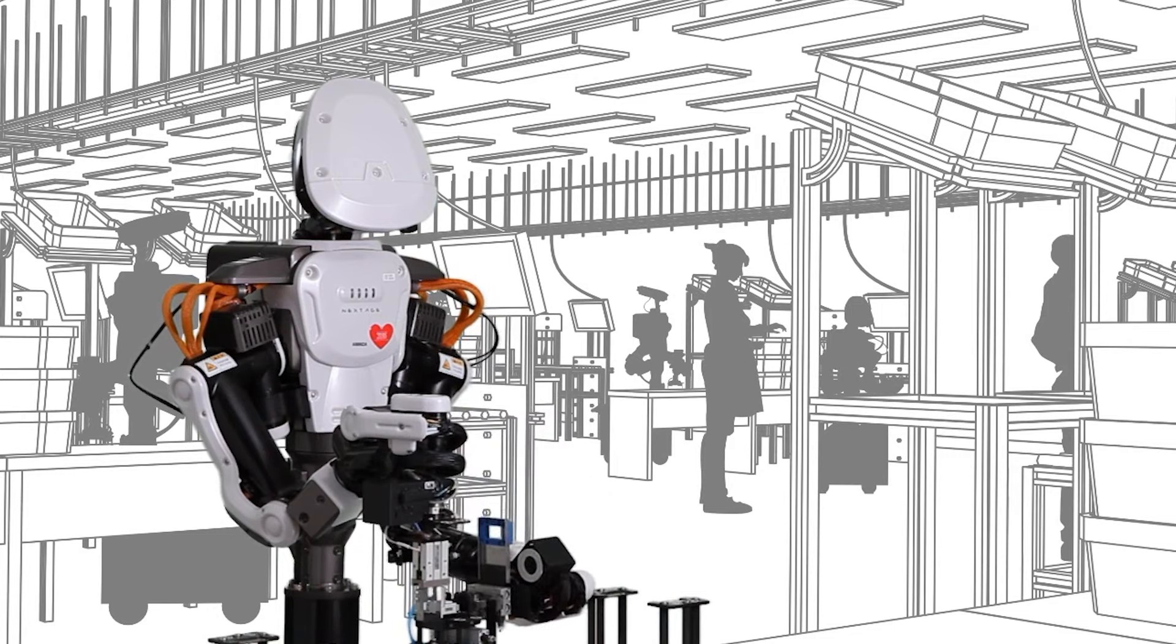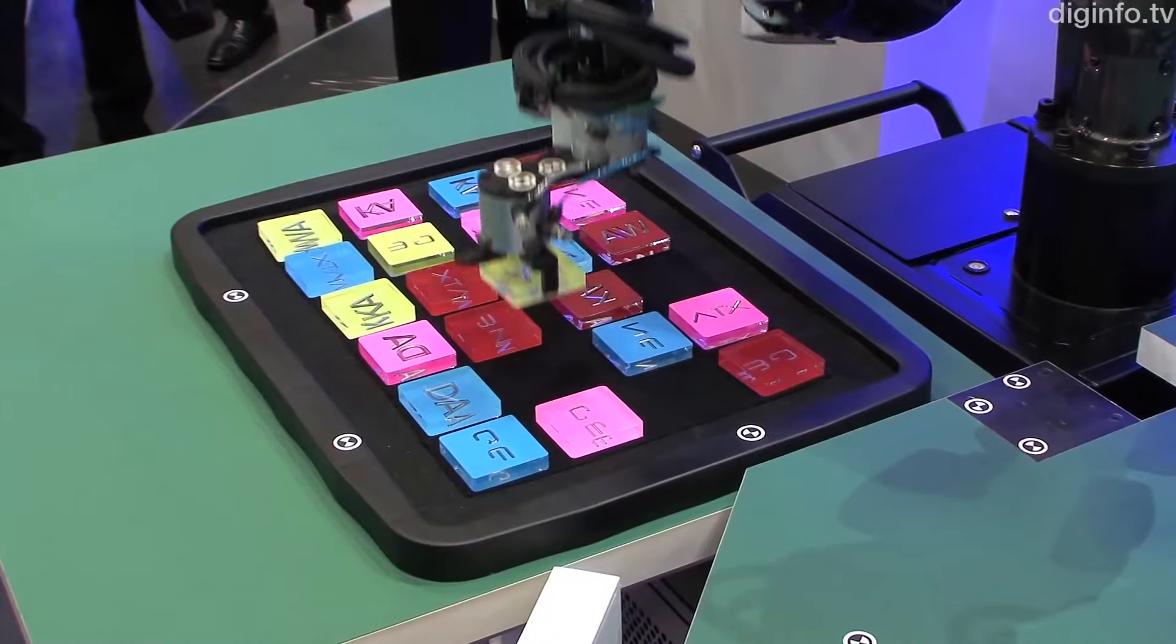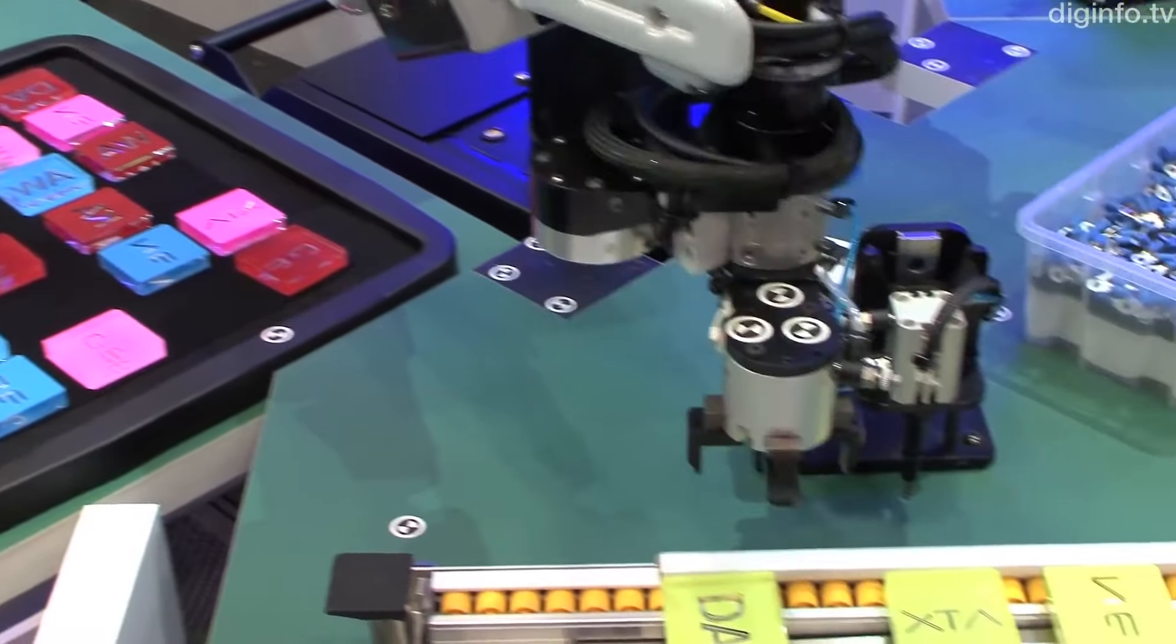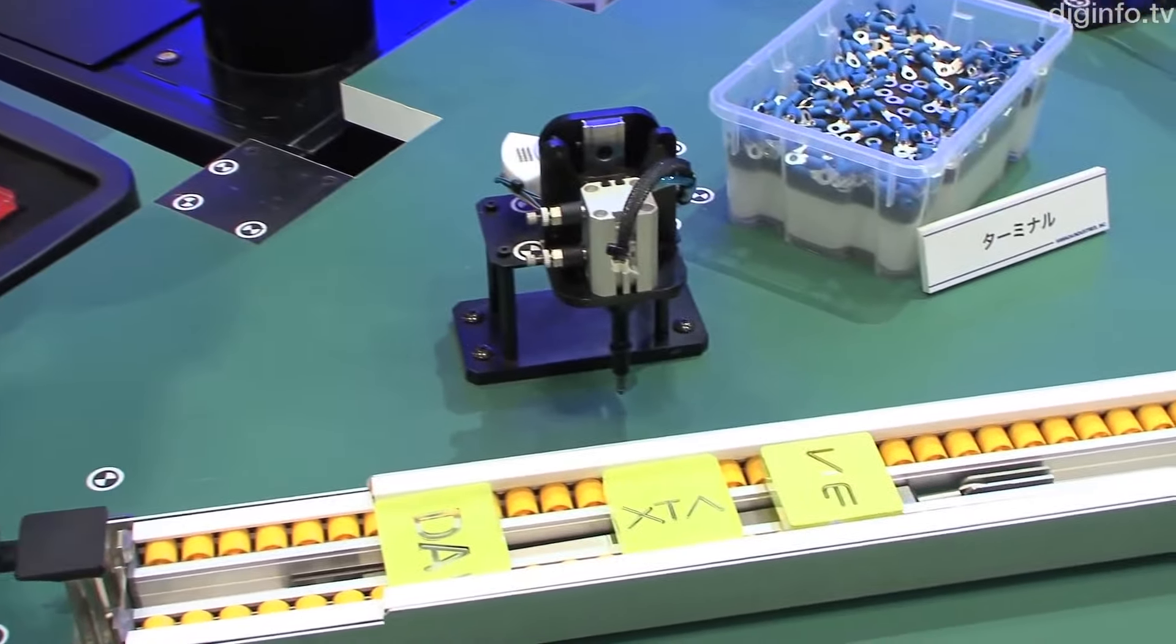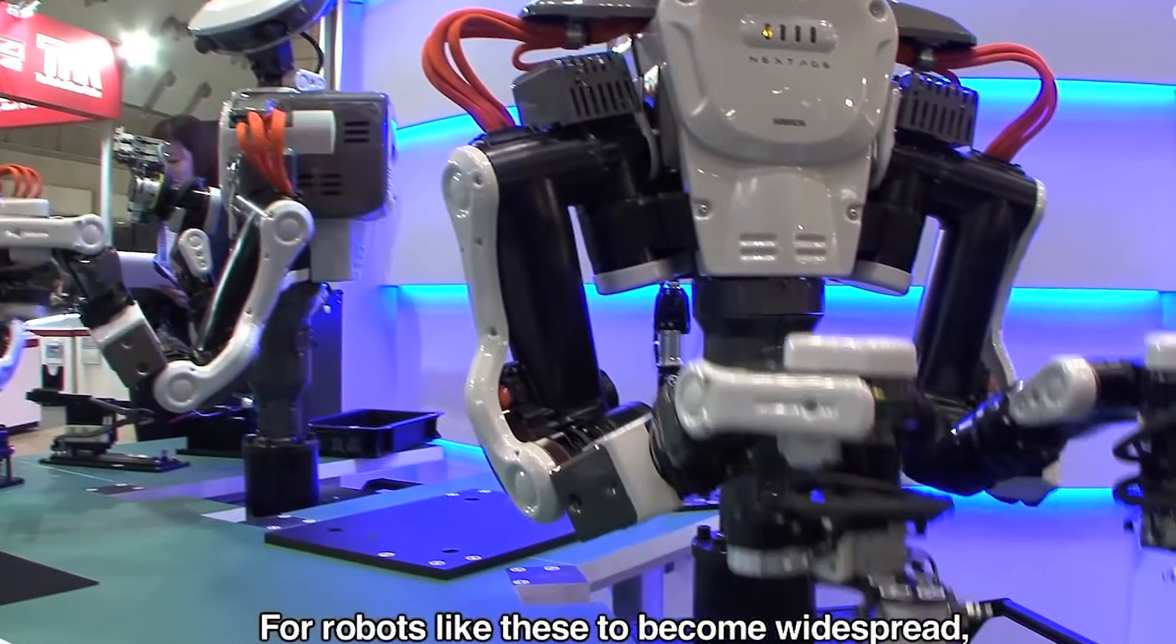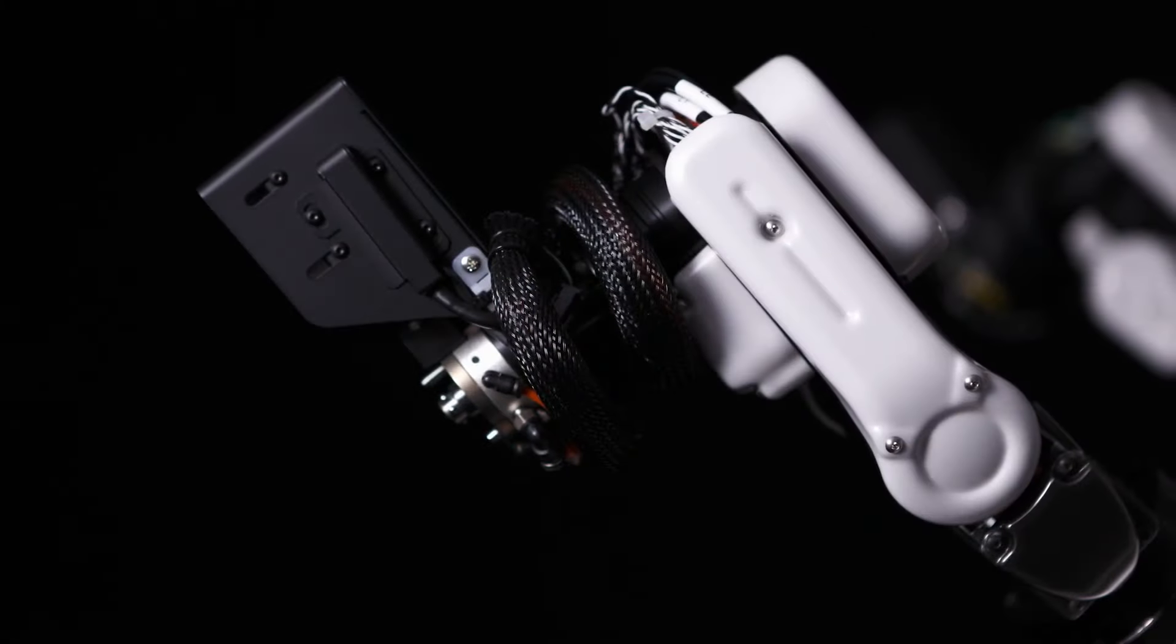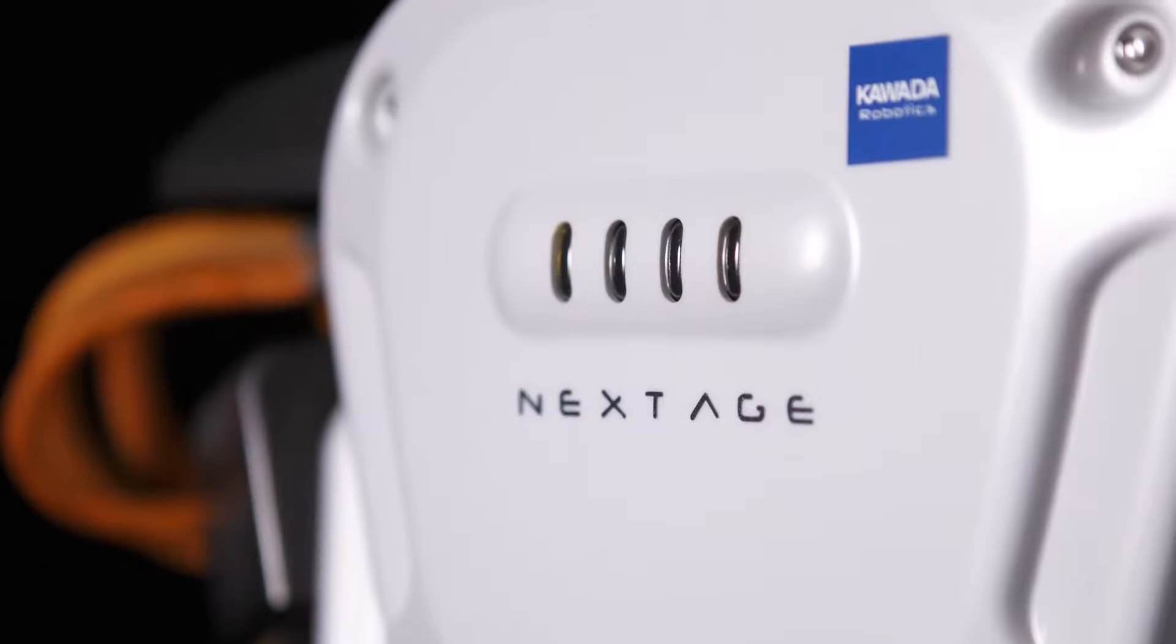One of the coolest things about Nextage is its ability to do lots of different jobs. Whether it's building cars, making gadgets, or even packing boxes, Nextage is always ready to lend a hand or two. And because Nextage is so good at what it does, it's helping companies all over the world make things faster and better than ever before. With Nextage leading the way, the future of manufacturing looks brighter than ever.